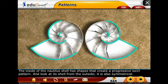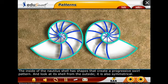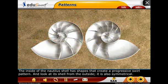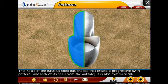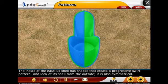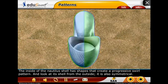The inside of the nautilus shell has shapes that create a progressive swirl pattern. And look at its shell from the outside — it is also symmetrical.